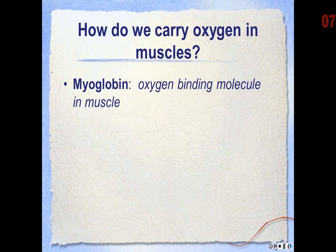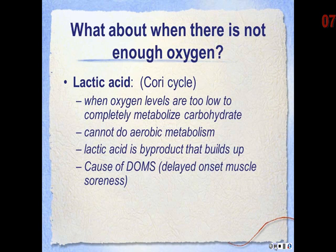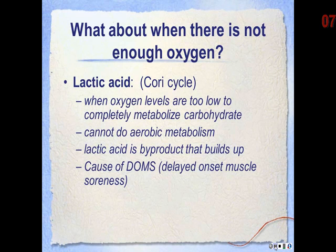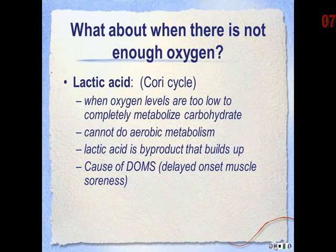The ability of the muscle to carry oxygen is important because oxygen is needed for aerobic metabolism. Myoglobin is the oxygen-binding molecule used by the muscle — the more myoglobin, the more oxygen you can carry. When there is not enough oxygen to completely metabolize the pyruvate, the pyruvate will be converted to lactic acid through the Cori cycle, or the lactic acid cycle. The cell will only do this when it cannot perform aerobic metabolism.